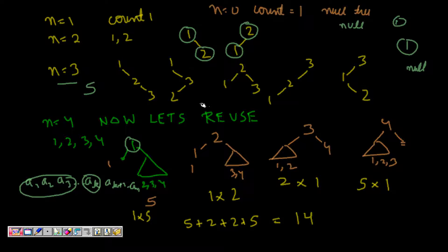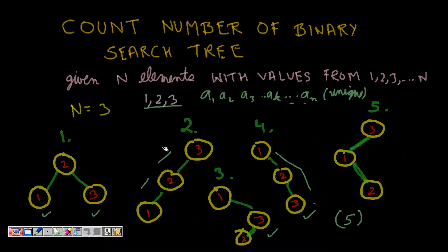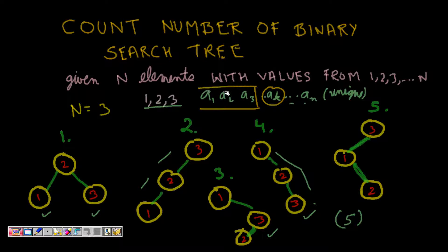So let's see if we are getting some pattern. One thing we observe is that each number will be the root exactly once across all cases. Also, if ak is the root, then a1, a2, a3 — all less than ak — form part of the left subtree, and ak+1, ak+2 till aN form part of the right subtree. This is something recursive — I can choose any of a1 to ak-1 as the root of the left subtree. So this is a recursive problem.